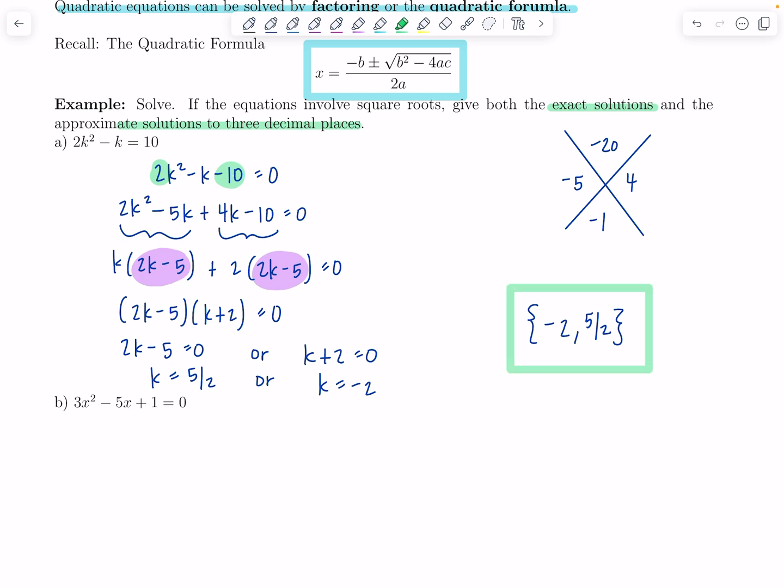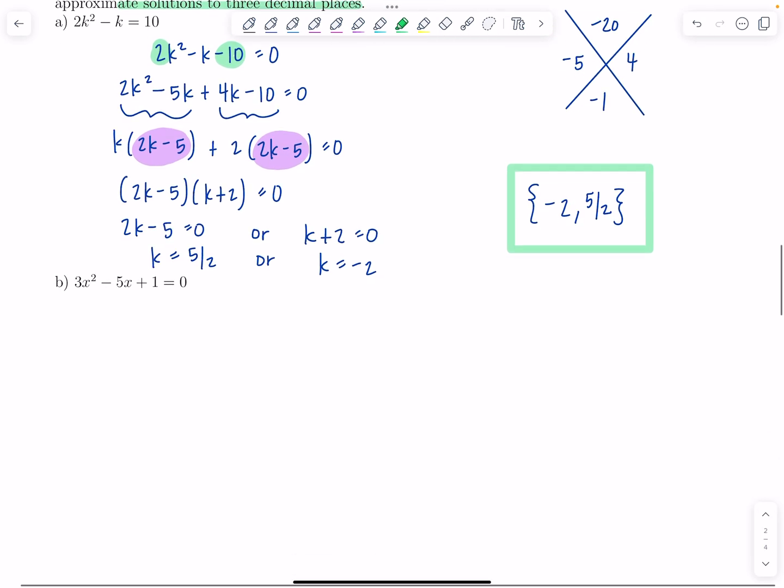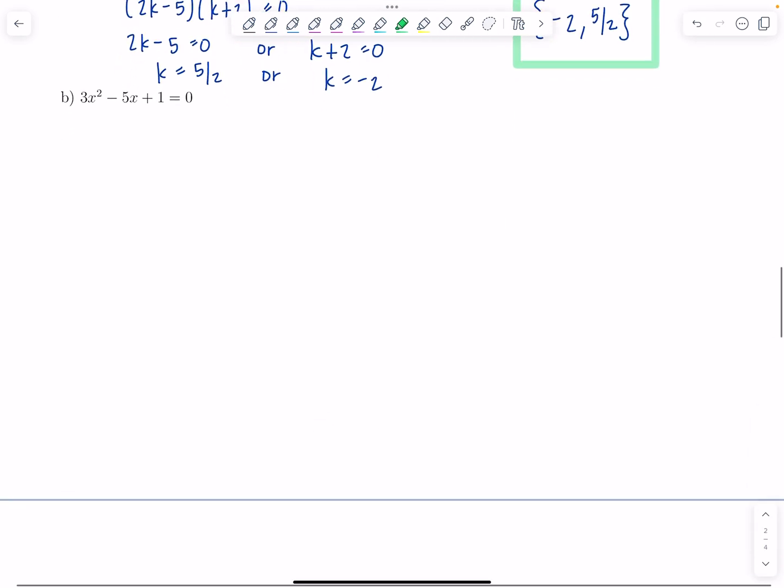So we have two solutions, which is typical in a quadratic equation. And then you can put them both in the solution set, separated by a comma, and the order doesn't matter that you put them in. Good, how was that one? Let's look at another example.